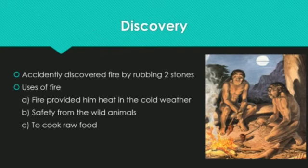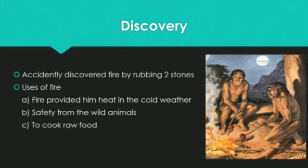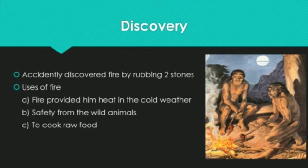The greatest achievement of man during this period was when he accidentally discovered fire by rubbing two stones against each other. Early man didn't invent fire intentionally — just accidentally, by rubbing or throwing stones against each other, he discovered fire. After discovering fire, it became very important for early man. Fire provided him heat in cold weather.